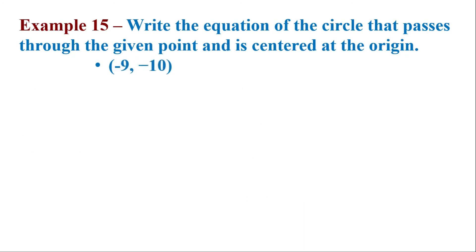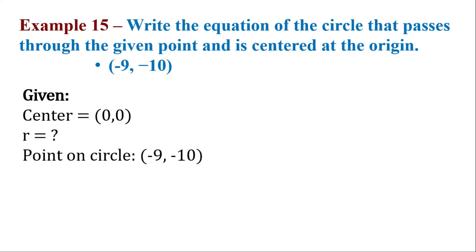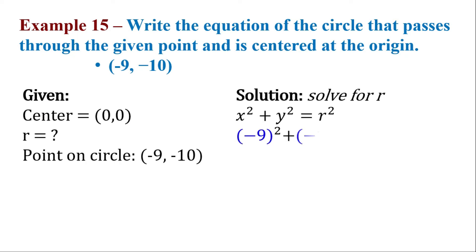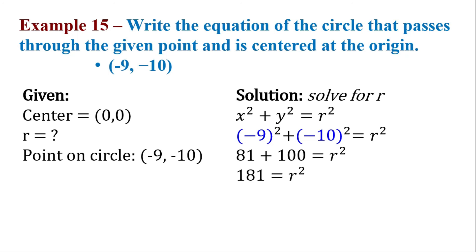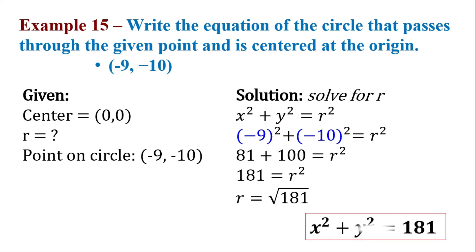For our last example, let's solve for r. That is negative 9 squared plus negative 10 squared, which is 81 plus 100, giving us 181. The radius is the square root of 181. Therefore, this will be our equation of the circle.